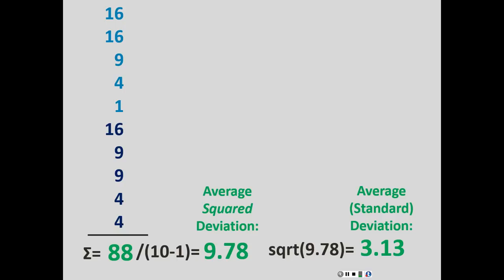If you take the square root of 9.78 you get the average squared-then-unsquared deviation. Squaring and then unsquaring has the nice property of making negative deviations positive so they don't cancel out, and when you unsquare it you're back in regular units. So the average number of friends is five, and the standard deviation — the average amount by which people differ from that average — is 3.13 friends. This squaring of deviations is really important for ANOVA, t-tests, and regression later on.